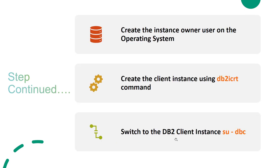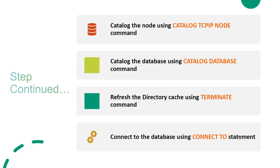Once the software is unzipped, you will find a utility called 'db2_install'. Use that utility to install DB2. After installation, create the DB2 client instance using a command called 'db2icrt'. Before that, you need an operating system user — ask the Unix admin to provide a user ID which will become the client instance owner. Switch to the DB2 client instance using 'su - dbc' (the instance owner user).